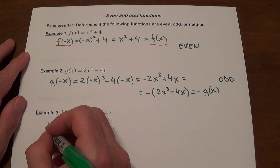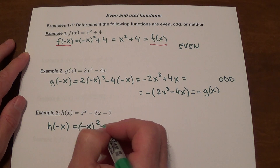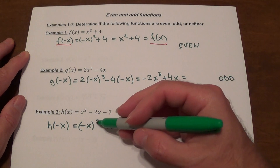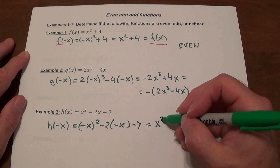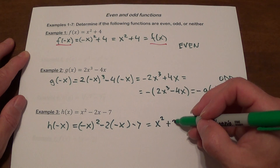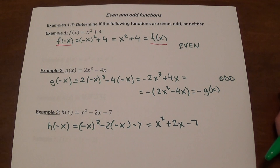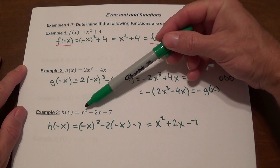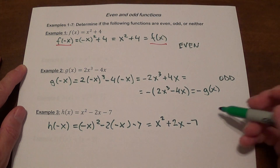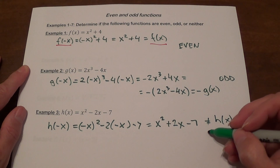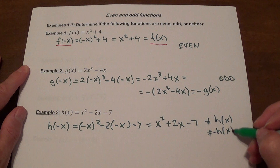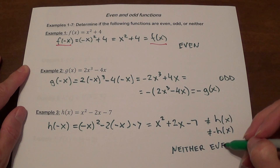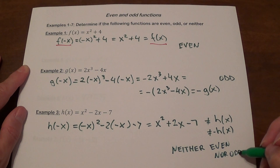Next, I'm going to do h of negative x, which is going to be negative x squared minus 2 times negative x minus 7. Even degree: the negative disappears, giving x squared. Negative 2 times negative x gives plus 2x. Then you have minus 7. Clearly this is not the original function, nor is it the opposite of our function. The opposite would be negative x squared plus 2x plus 7, and that's not what we have. So it does not equal h of x and it does not equal negative h of x — this one will be neither even nor odd.